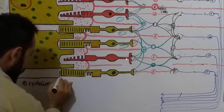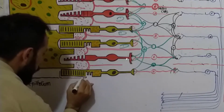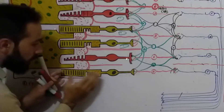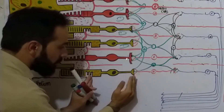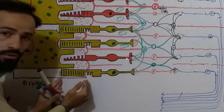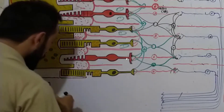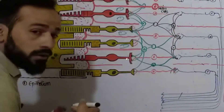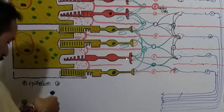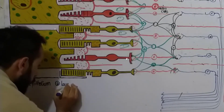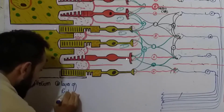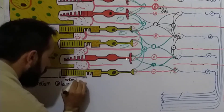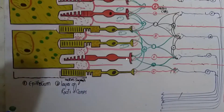Next to the epithelial layer, look carefully — this layer contains all the outer segments of the rods and cones, not all parts of the rods and cones. This is the inner segment and this is the outer segment of the rods and cones. It is called outer because it is towards the outer part of the retina. So this is the second layer, called the layer of rods and cones — specifically the outer segments of the rods and cones.